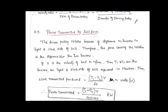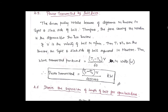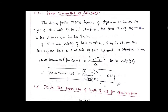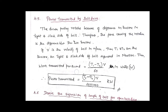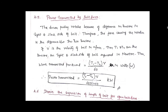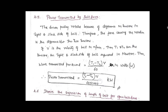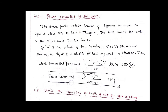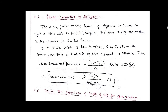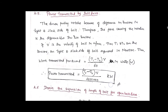The power transmitted by the belt drive is related to the tensions T1 and T2 present in the tight side and slack side of the belt respectively, and depends upon the velocity of the belt. Power transmitted equals (T1 − T2) × V divided by 1000 to convert into kilowatts.